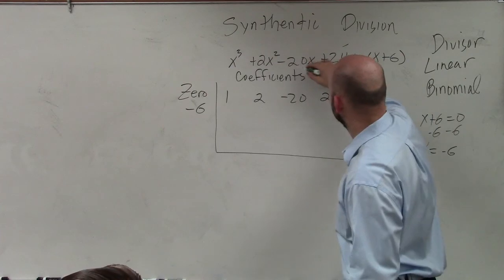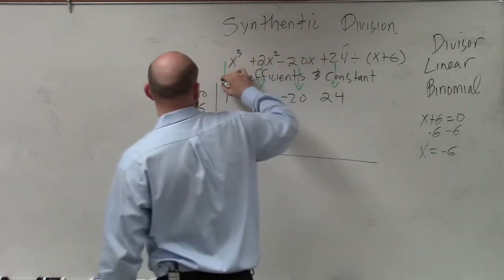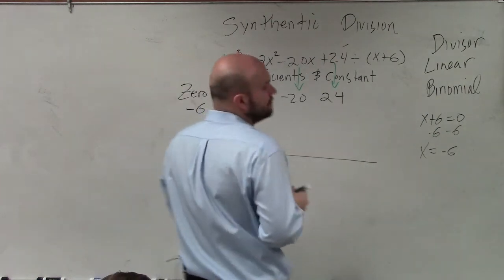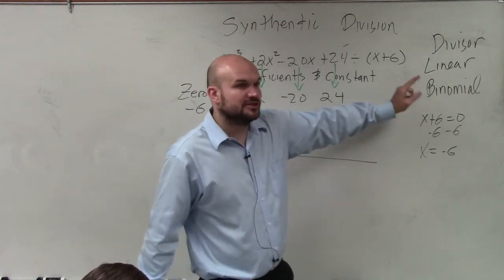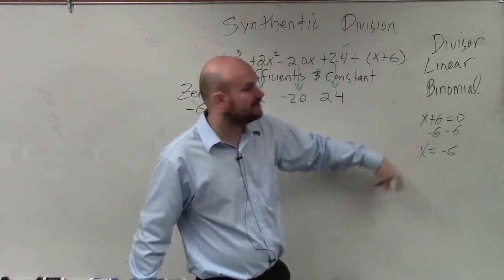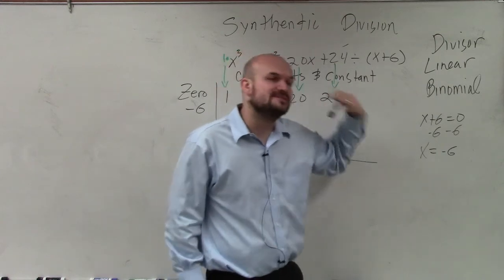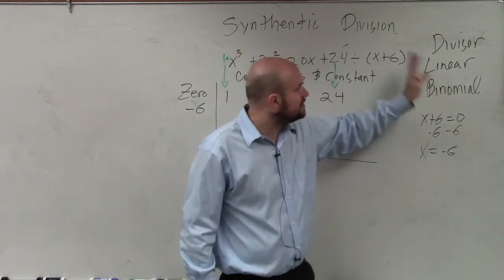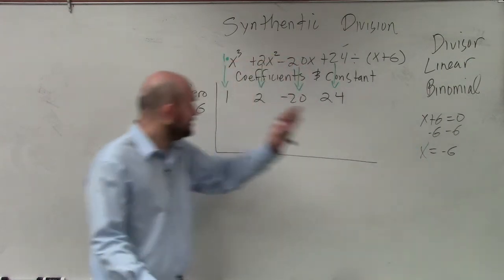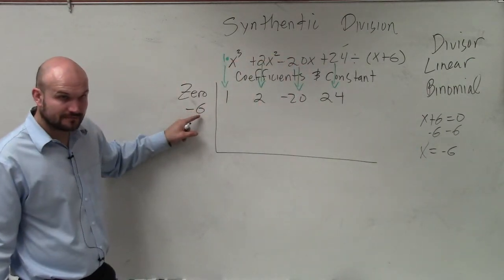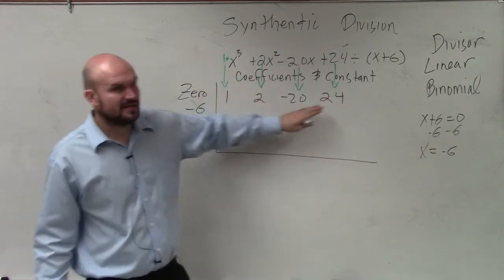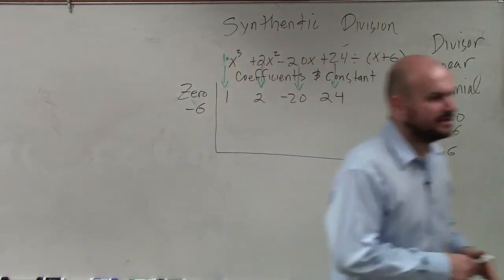So, basically, all I'm doing, your coefficients and your constant. Because you set your divisor, your divisor is your factor. If it evenly divides into it, it's a factor. So, how do we go from factors to zeros? We set our factors equal to zero. So, you set your divisor equal to zero to find the possible zero. Then, you put the possible zero right here. Then, you take all of your coefficients and constants of your polynomial, and you put them right there. Does everybody follow me from what I've done so far?